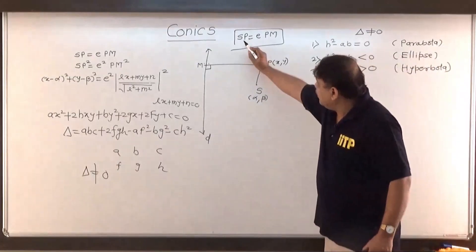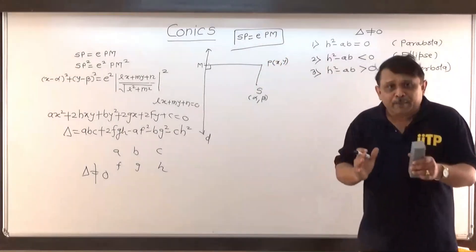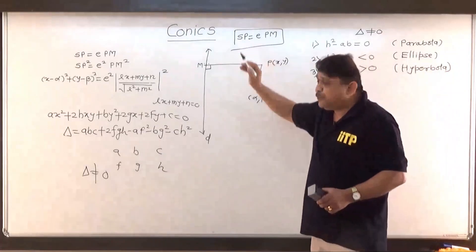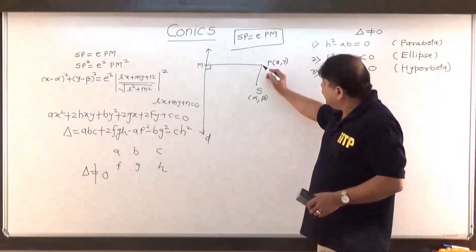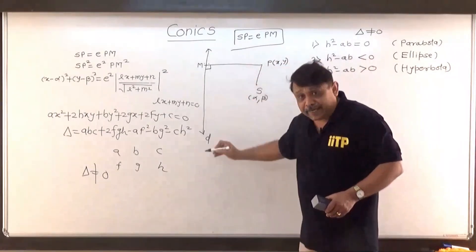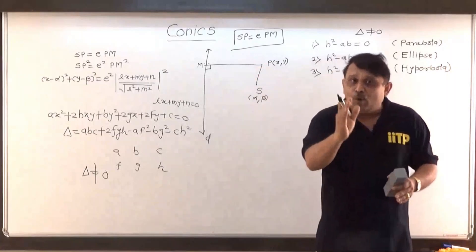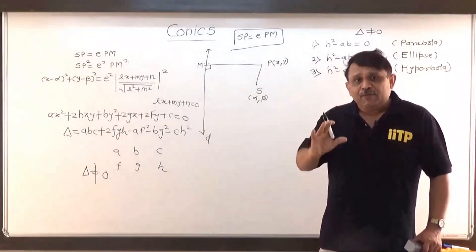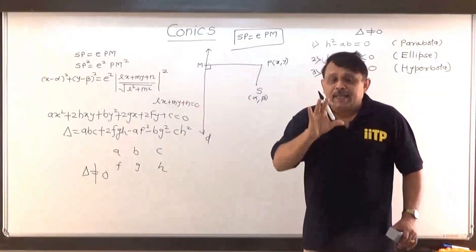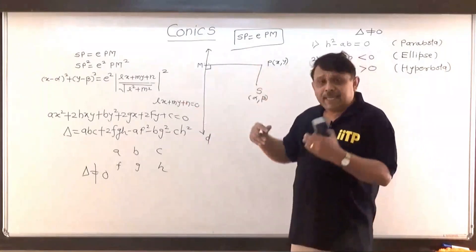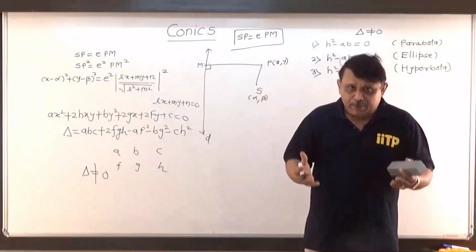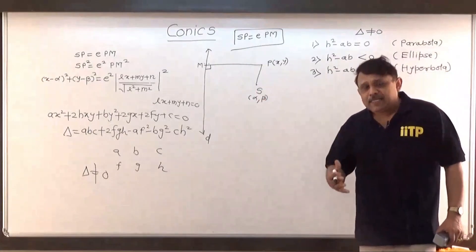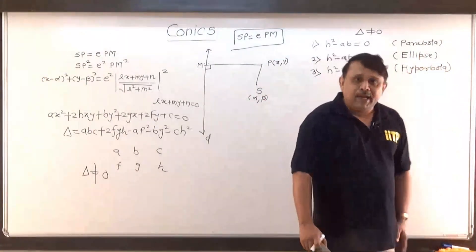Remember that SP equals e times PM is called the focus-directrix property, because SP is related to the focus and PM is the perpendicular from P on the directrix. Everything is concerned with focus and directrix, containing the eccentricity e. When this property is satisfied, we get the equation of the conic. When e equals 1, it is a parabola; e less than 1, it is an ellipse; e greater than 1, it is a hyperbola. This way the conic can be classified into three classes: parabola, ellipse, and hyperbola.